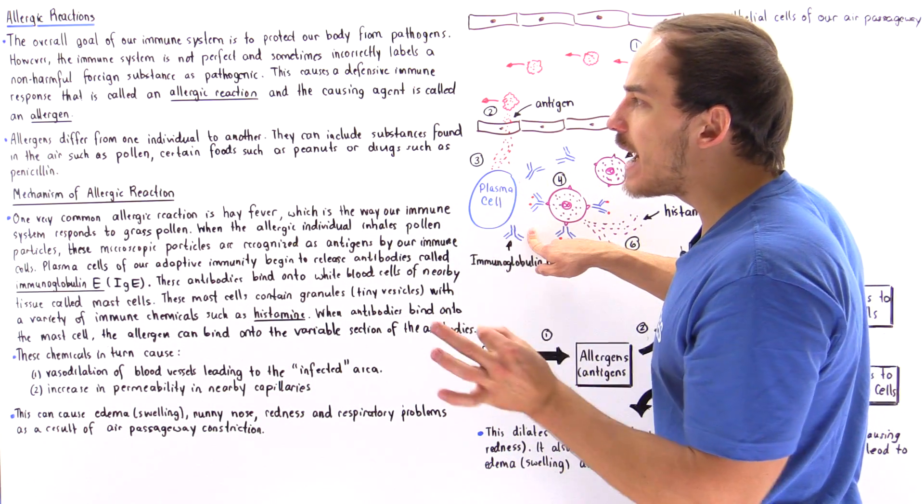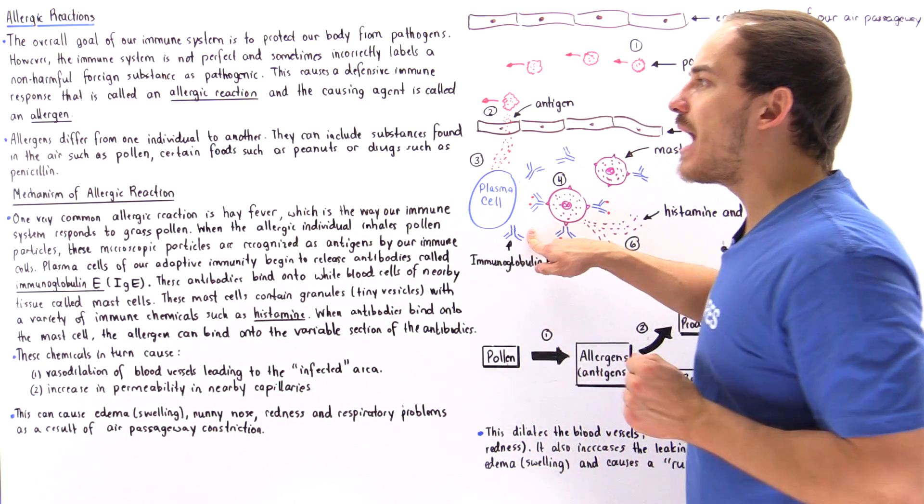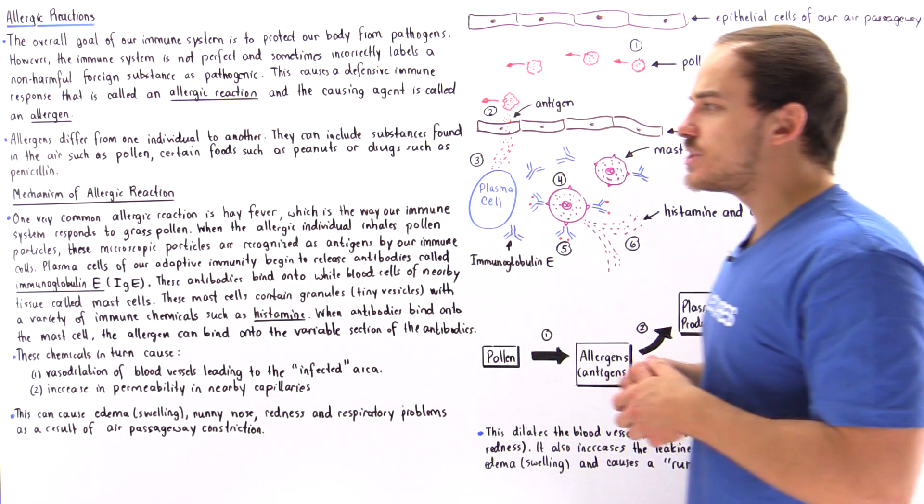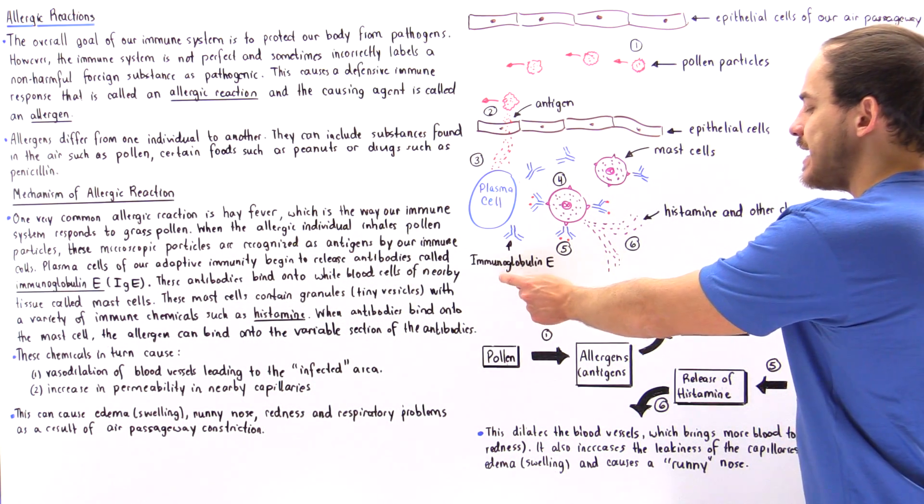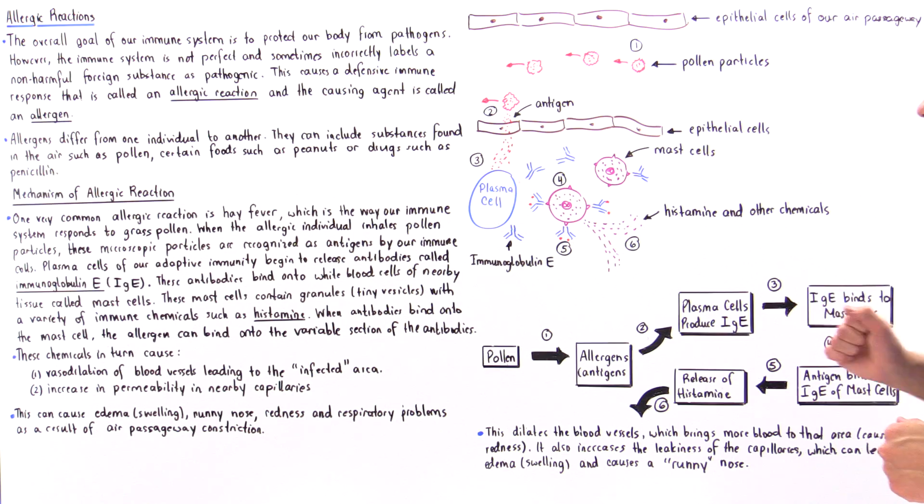And the most common type, the predominant antibody involved in allergic reactions, is immunoglobulin E. So immunoglobulin E is produced by the plasma cells.